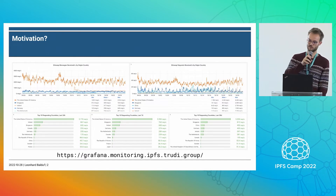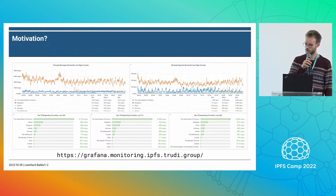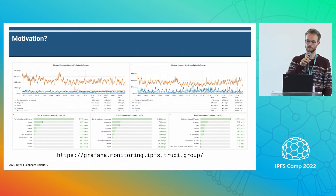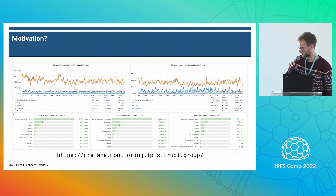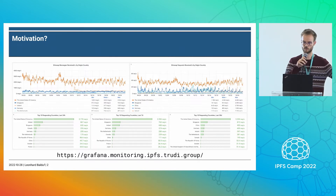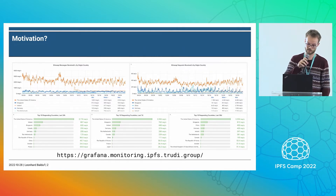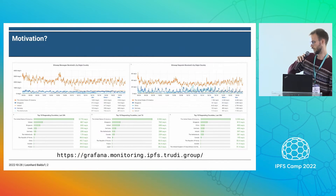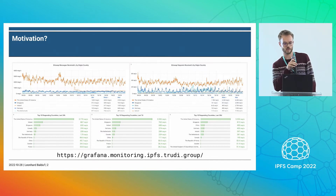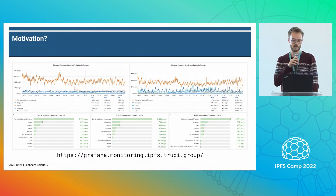So why do we want to do this? First, we have a bunch of fancy Grafana dashboards which display real-time information about the network. This is real-time geolocation of requests that are performed on the network. You can see this at grafana.monitoring.ipfs.trudy.group, where you can go and look at this stuff in real-time.